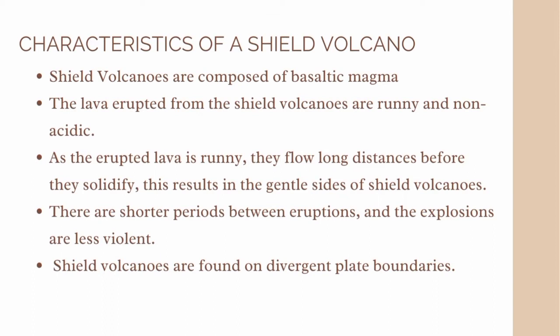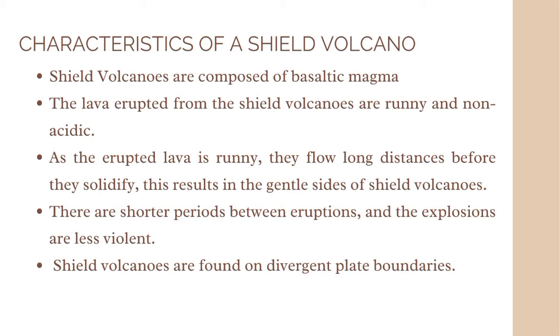The characteristics of a shield volcano: first, shield volcanoes are composed of basaltic magma — high in temperature but very low in silica and gas content. Next, the lava erupted from shield volcanoes is runny and non-acidic. Third, as the erupted lava is runny, it flows long distances before solidifying, resulting in the gentle sides of shield volcanoes. There are shorter periods between eruptions and explosions are less violent. Lastly, shield volcanoes are found on divergent plate boundaries. In the Philippines, Canlaon is an example of a shield volcano.